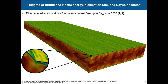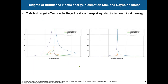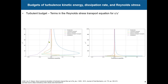Basically here I'm using this data — I got access to this data and am just plotting all the information. We have all the production, turbulent transport, viscous transport, pressure transport, and dissipation. We plot all the terms and see the evolution as a function of y-plus.